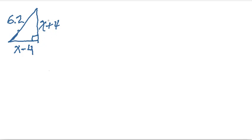Now the Pythagorean theorem on this problem states the following. It says that the length of the one side, x plus 4, squared, plus the length of the other leg, x minus 4, quantity squared, is going to have to be equal to the hypotenuse squared. That's really just our a squared plus b squared is equal to c squared formula. 6.2 squared.